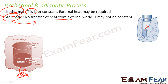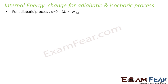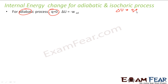For an adiabatic process, there is no transfer of heat from the external world, meaning Q = 0. Using delta U = Q + W, and since Q = 0, delta U = W. So for an adiabatic process, the change in internal energy equals the work done.